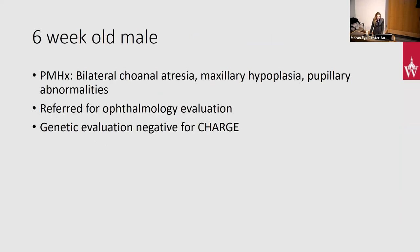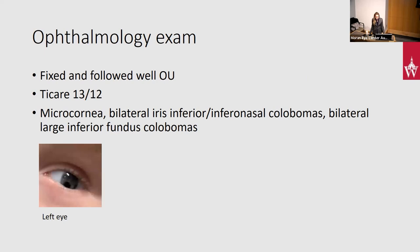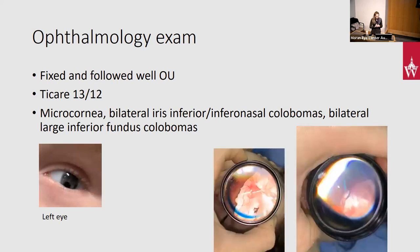Moving on to the anterior and posterior segment case: this is a little six-week-old male who came with a history of bilateral choanal atresia and maxillary hypoplasia. He was sent because they found pupillary area abnormalities. He had a negative evaluation for CHARGE syndrome. When I saw him, he fixed and followed well with both eyes. Eye pressures were great. He clearly had microcornea and bilateral inferior inferonasal colobomas — this is the left eye. There were also large bilateral inferior fundus colobomas extensively involving the posterior pole.